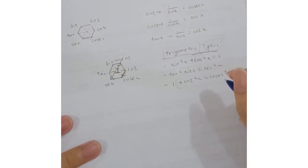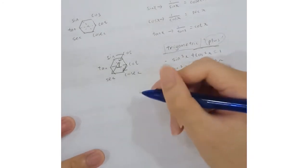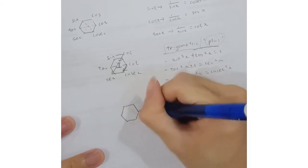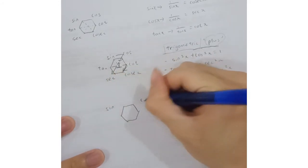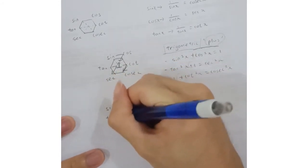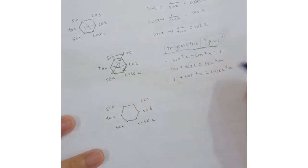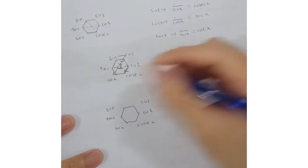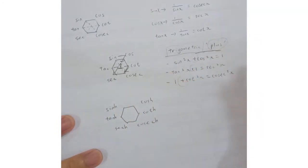When we get into hyperbolic functions, the first step is the same — write out the formulas: sinh, cosh, tanh, cosh, sech, and csch. Because we are dealing with hyperbolic functions, we must add an 'h' to each, indicating that this is a hyperbolic function. In the middle, we still have a 1.